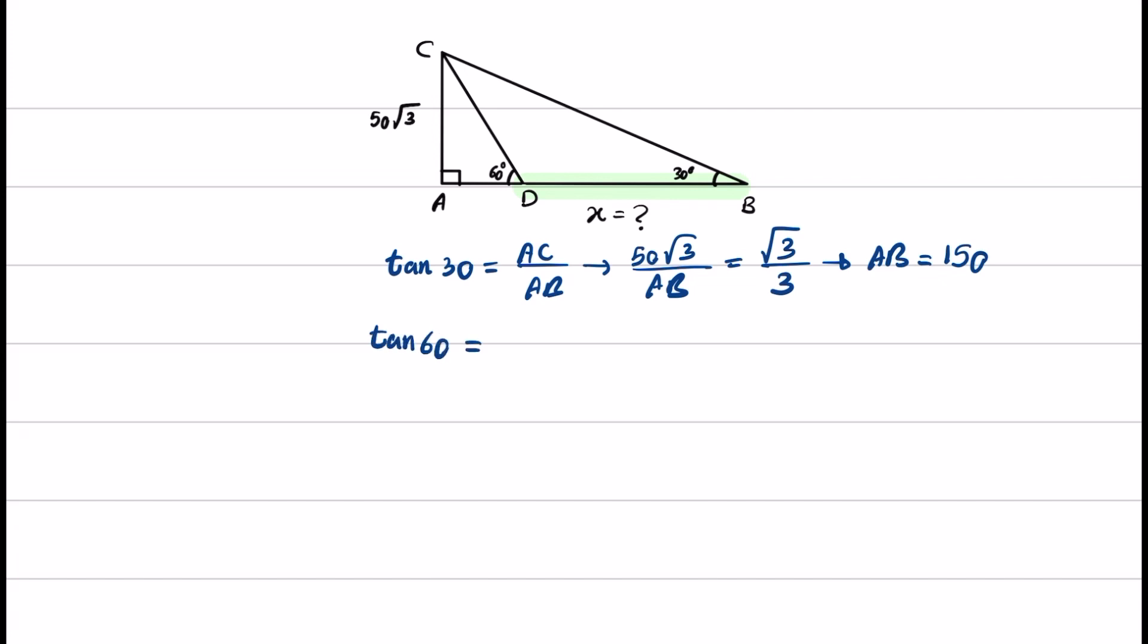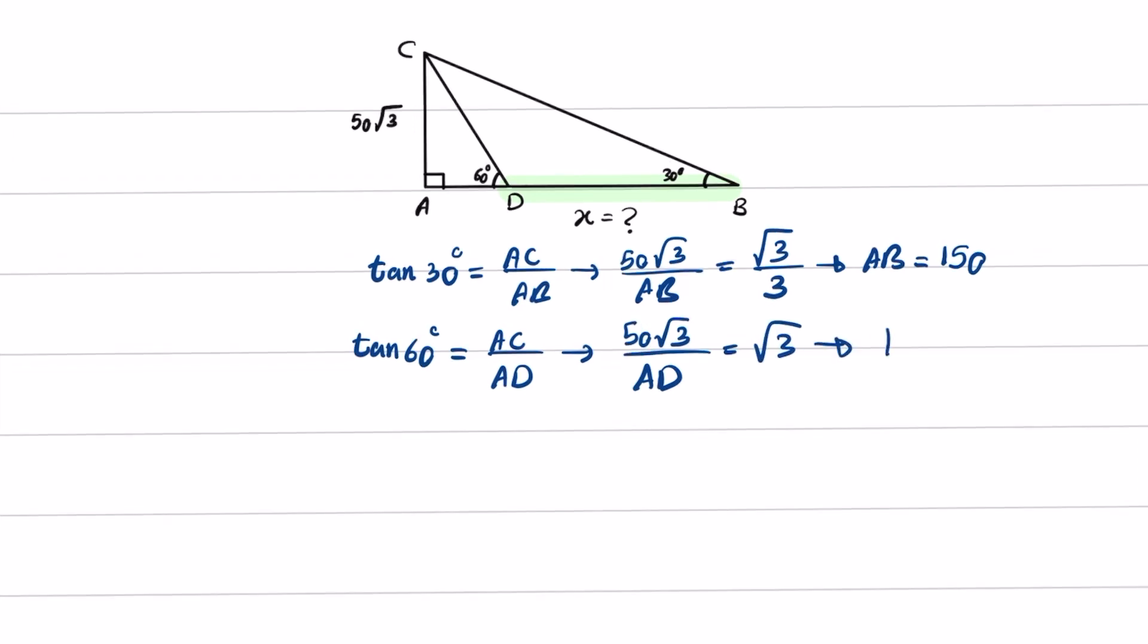Tangent 60 degrees equals AC over AD this time. If I replace these terms, we have this equals the tangent of 60 degrees, which is square root of 3. This gives us AD equal to 50.